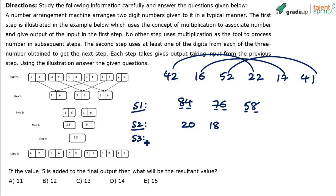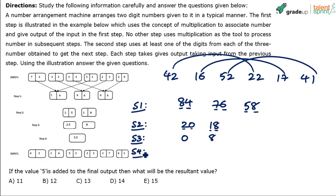In step 3, divide units place by tens place. For 20: units is 0, tens is 2 — 0 divided by 2 is 0. For 18: units is 8, tens is 1 — 8 divided by 1 is 8. So we get 0 and 8. In step 4, subtract the first number from the second: 8 minus 0 equals 8. The final output is 8.